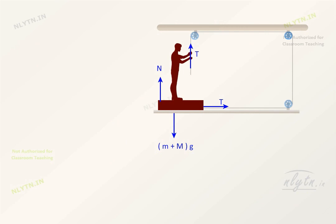Since the board tends to slip towards right due to the tension in the rope, friction on the board will be towards left.